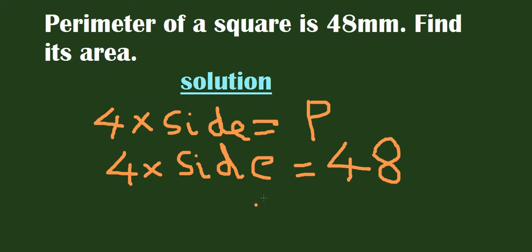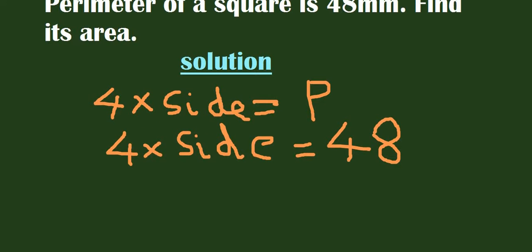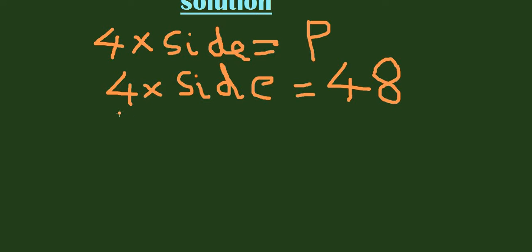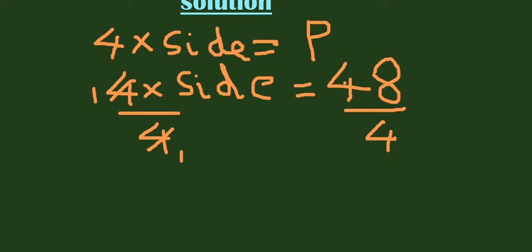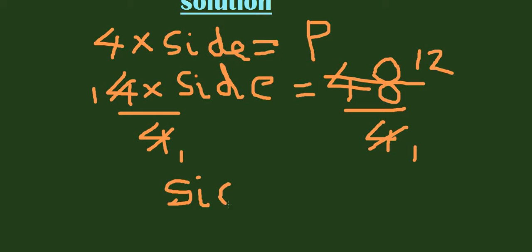We are going to divide both sides by 4 — by 4 on the left and by 4 on the right side. 4 divided by 4 is 1, and 48 divided by 4 is 12. So the length of one side of this square is equal to 12 millimeters.